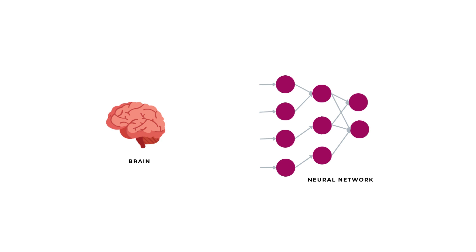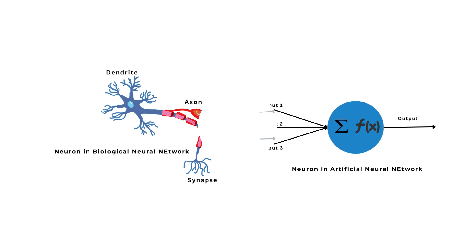Neural networks analyze and make predictions from data by making interconnected neurons, just like how our brain processes information. On the screen, we have a biological neuron and an artificial neuron. Both have a designated place to take input, process it and produce output, and the output block connects to other neurons.